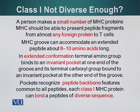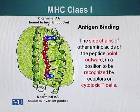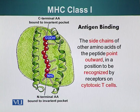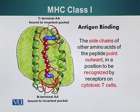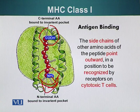MHC Class I molecules bind and display peptide fragments using the protein backbone, including the amino-terminus and carboxy-terminus, which bind the invariant pockets formed by the MHC protein itself. The side chains or R groups of the amino acids stick out and interact with the TCR — in the case of Class I molecules, that means cytotoxic T cells.